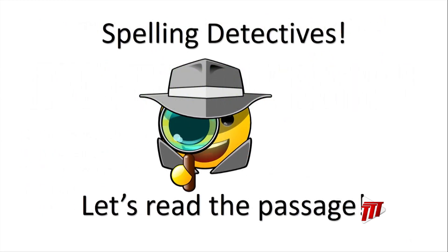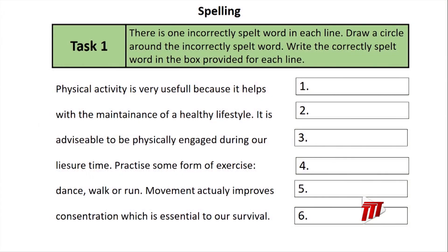So, spelling detectives, I want you to get ready to read this passage and find all the spelling errors. Let's read this passage together. Physical activity is very useful because it helps with the maintenance of a healthy lifestyle. It is advisable to be physically engaged during our leisure time. Practice some form of exercise — dance, walk, or run. Movement actually improves concentration, which is essential to our survival. So, this is our first task — let's see if we can find the errors.